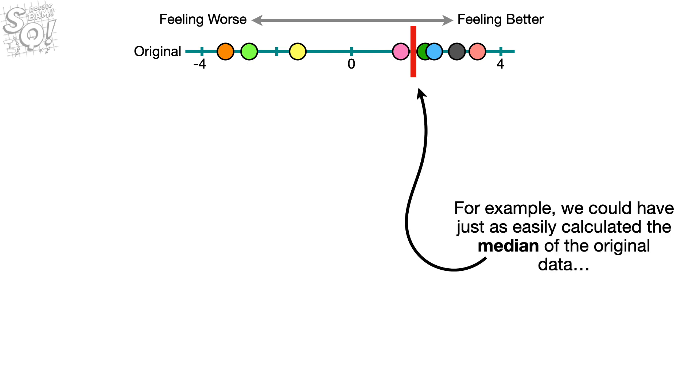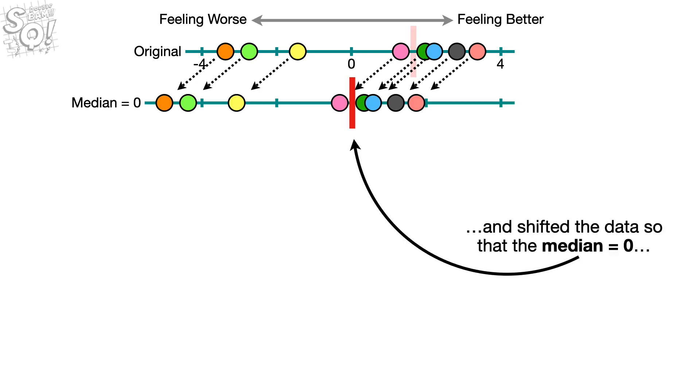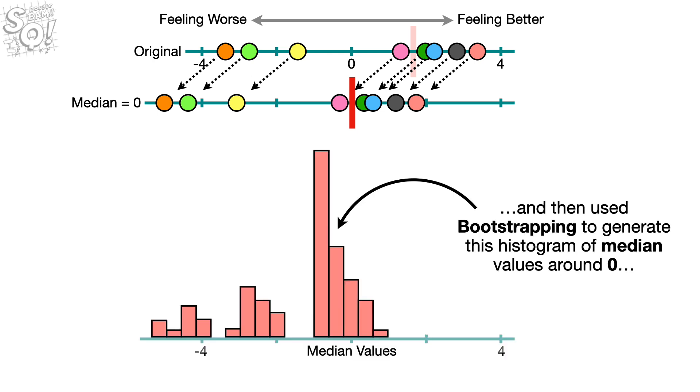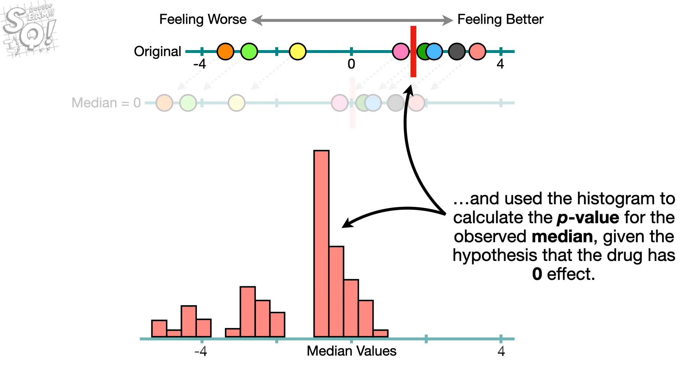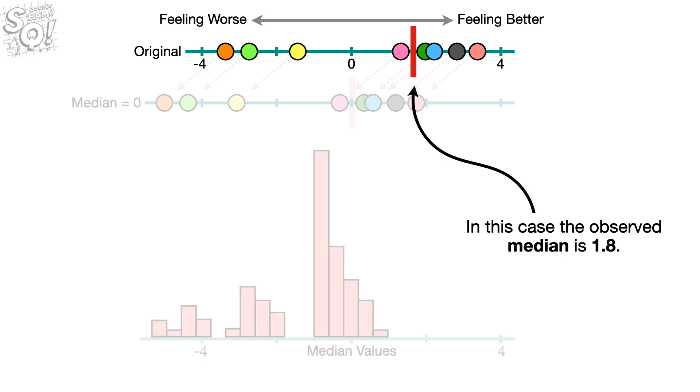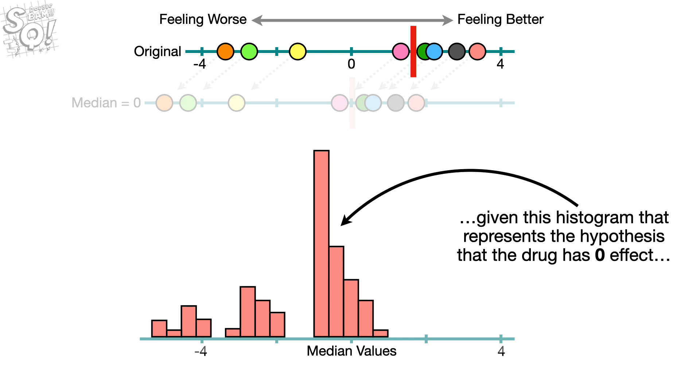For example, we could have just as easily calculated the median of the original data, and shifted the data so that the median equals 0, and then use bootstrapping to generate this histogram of median values around 0, and use the histogram to calculate the p-value for the observed median, given the hypothesis that the drug has 0 effect. In this case, the observed median is 1.8. So the p-value for the observed median, 1.8,